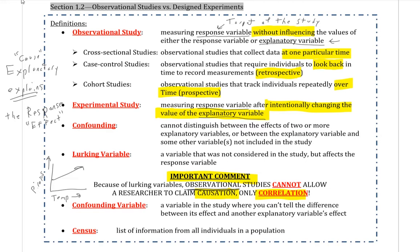So for observational studies, we cannot claim causation. If we were doing an experiment though, experimental studies do allow causation because we can control variables — that's the important key. Because you can control variables in experiments, you can claim causation there.